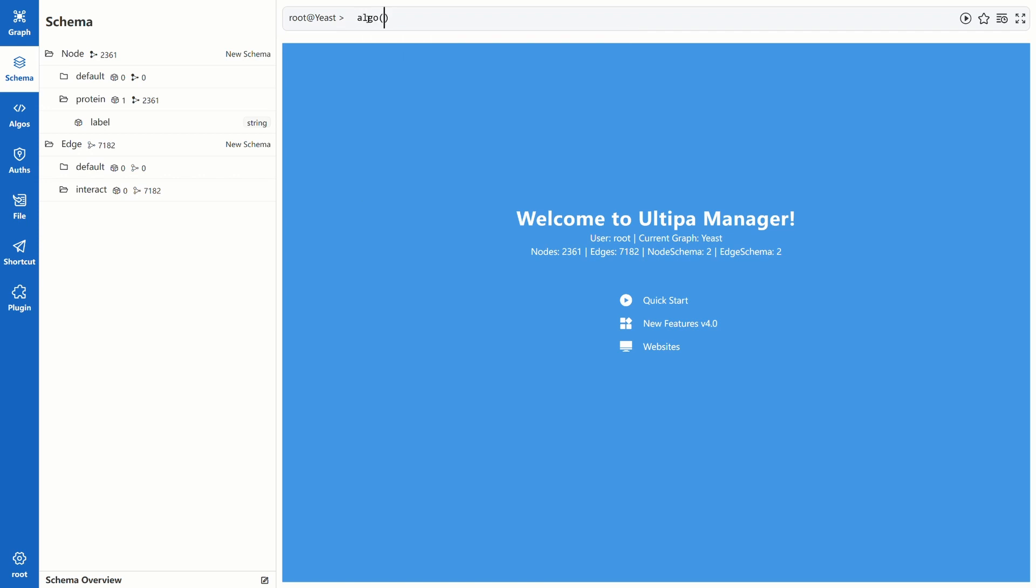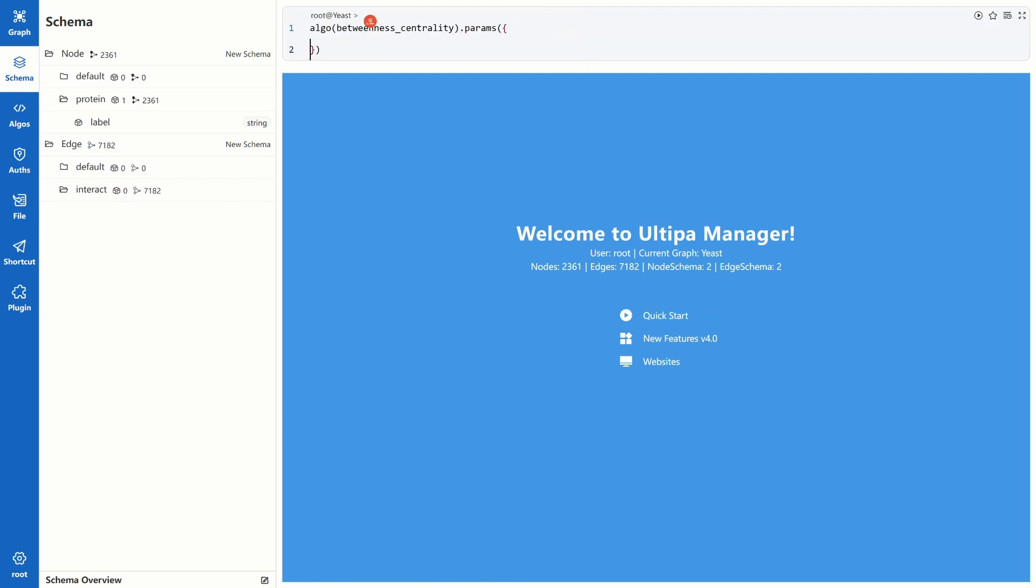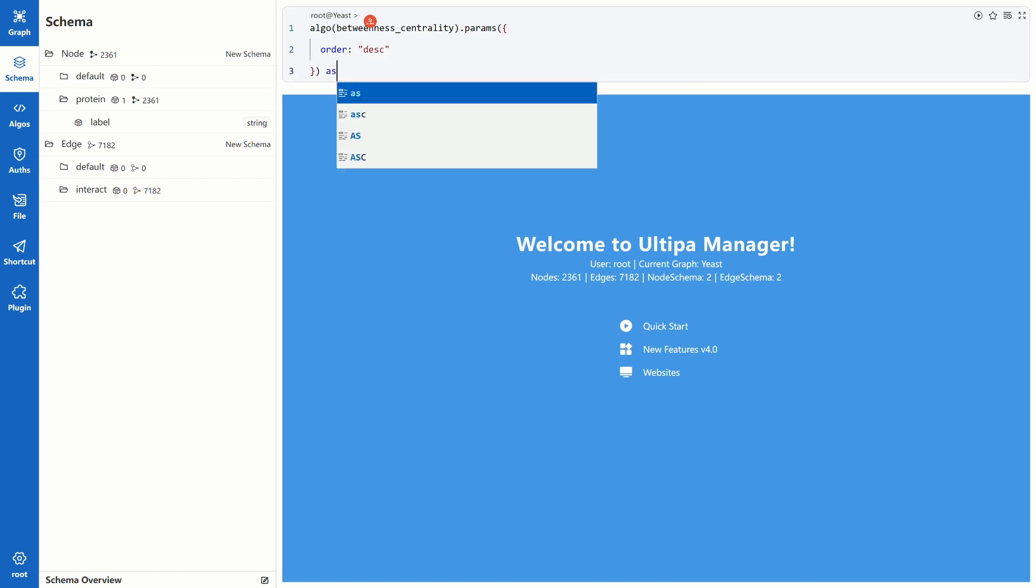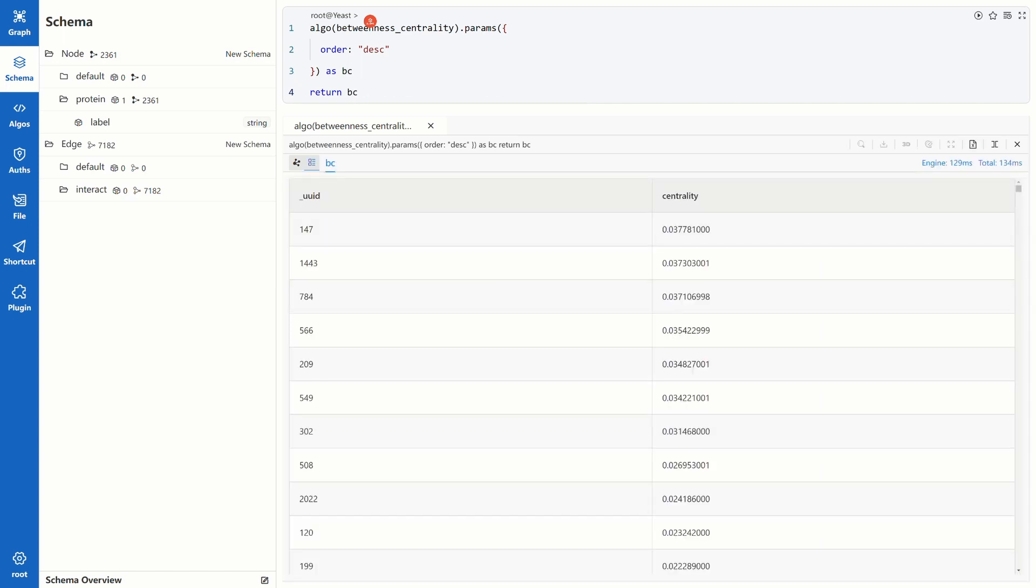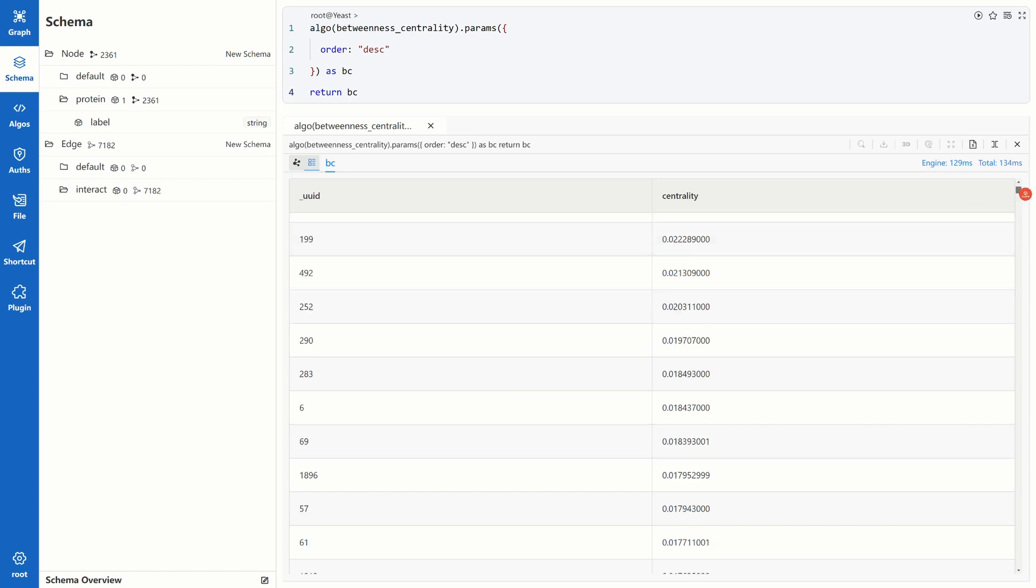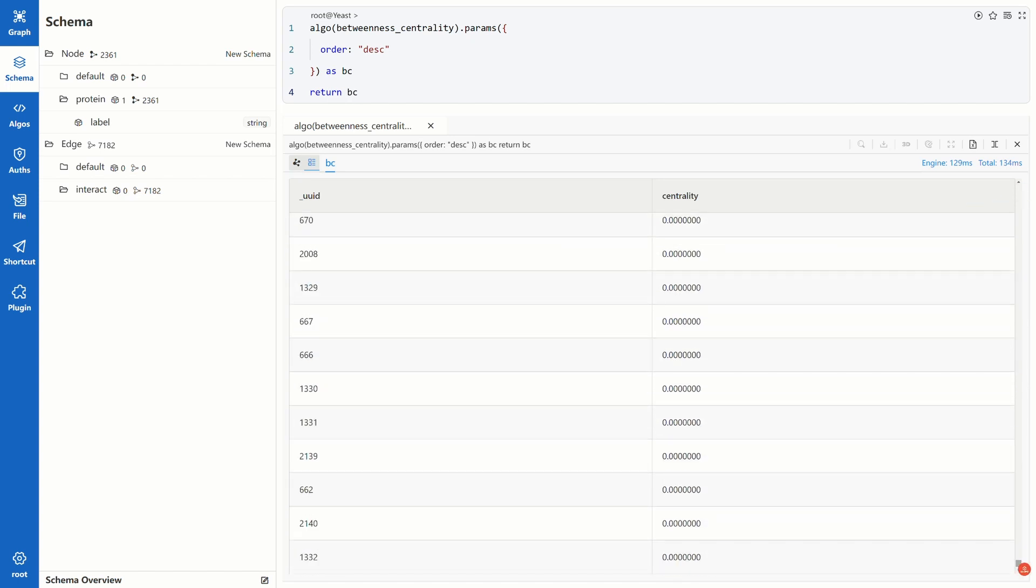Write the ALGO command and input betweenness centrality. In the parameter, there are not many things I want to restrict but only to set the order of the results as desc. Name the results alias as bc and return it. Take a glance of the results. The score range between 0.037 to 0. And I'm curious about the distribution of the scores.